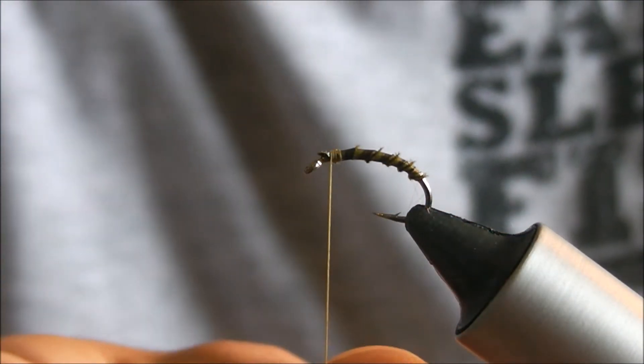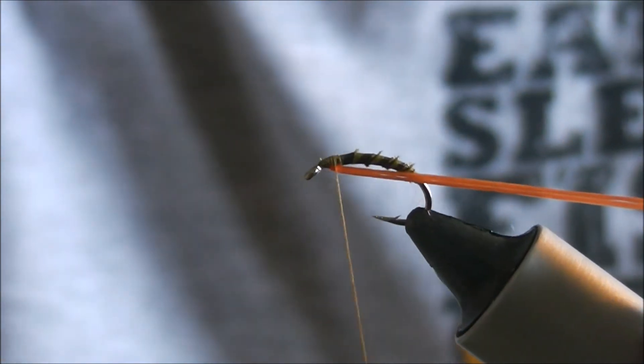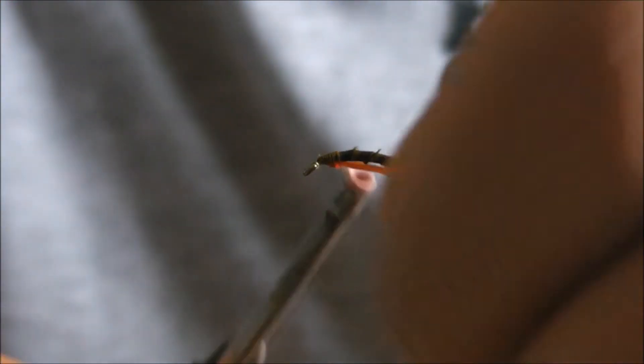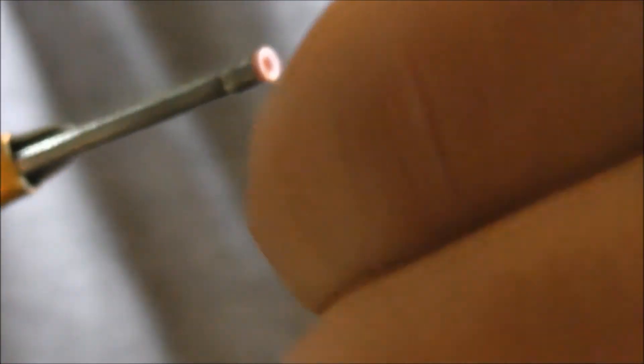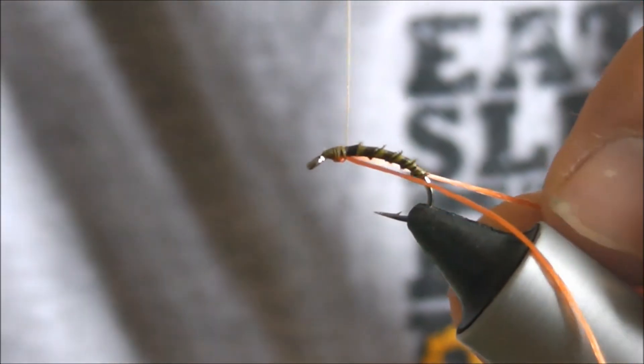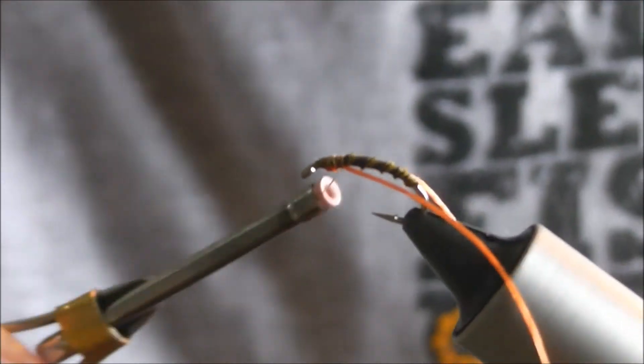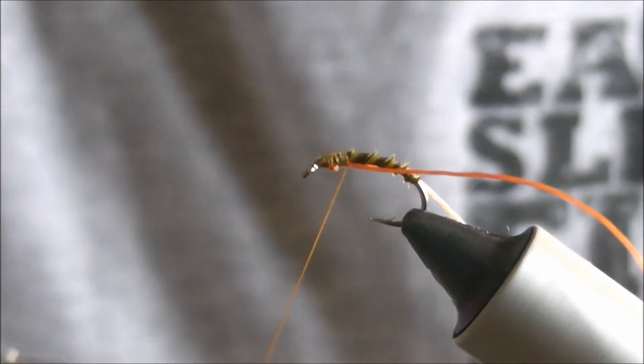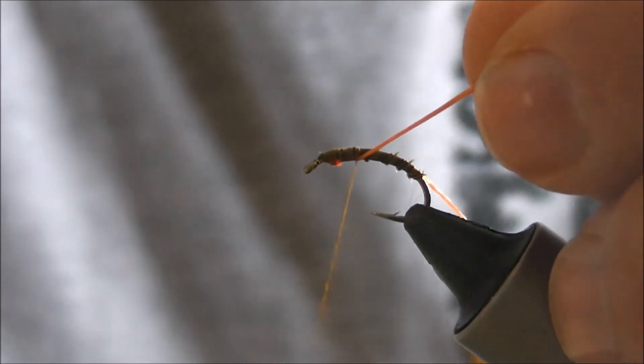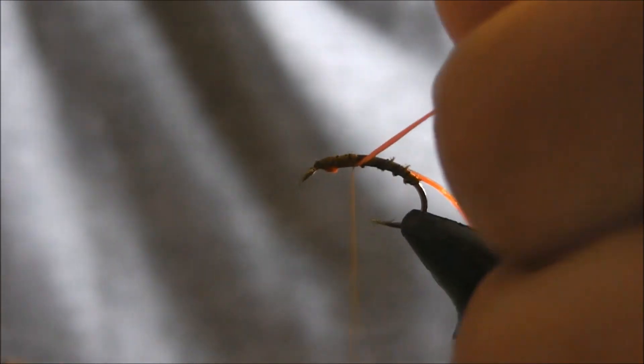So wrap it around your thread, come up underneath, just catch it in. Hold it back so it's directly underneath your hook. And then once you've caught it in a couple of times, pull one side one, the other, and just even them out. Just make sure that they're not hanging over to one side. Pull that up a little bit and come back to where you want the back of your thorax to start, so about there.